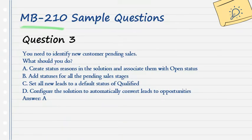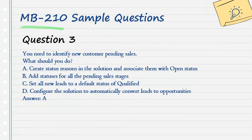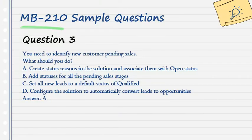Question 3. You need to identify new customer pending sales. What should you do? A. Create status reasons in the solution and associate them with open status. B. Add statuses for all the pending sales stages. C. Set all new leads to a default status of qualified. D. Configure the solution to automatically convert leads to opportunities. Answer: A.